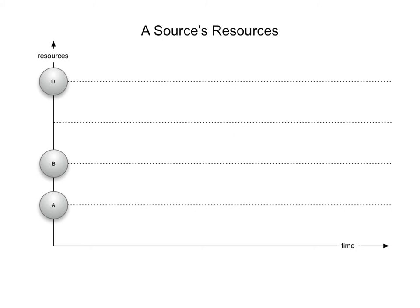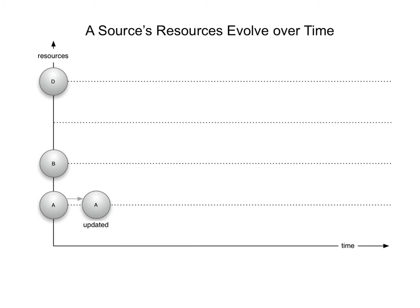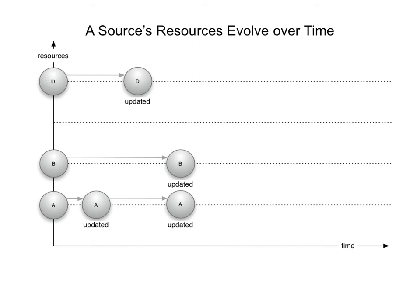One can depict this as follows. We see a source with three resources: URI A, URI B, and URI D at a certain moment in time. As time goes by, things happen to these resources. A gets updated at a certain moment in time, a bit later D gets updated. Then at some point both A and B get updated at the same moment. Later on, C gets created and D gets deleted. And then C gets updated, and so on and so forth.